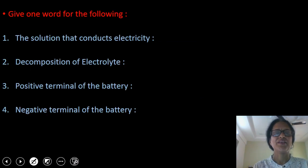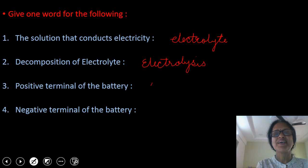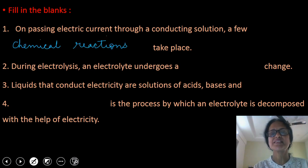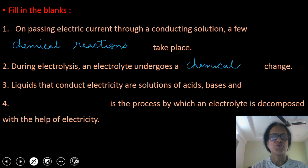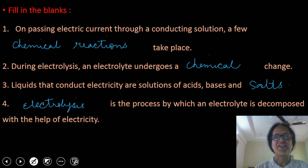You have to give one word for the following: the solution that conducts electricity is called an electrolyte. Decomposition of an electrolyte by passing electric current through it is called electrolysis. The positive terminal of the battery is anode. The negative terminal of the battery is cathode. For fill in the blanks: on passing electric current through a conducting solution, a few chemical reactions take place. During electrolysis, an electrolyte undergoes a chemical change. Liquids that conduct electricity are solutions of acids, bases, and salts. Electrolysis is the process by which an electrolyte is decomposed with the help of electricity.